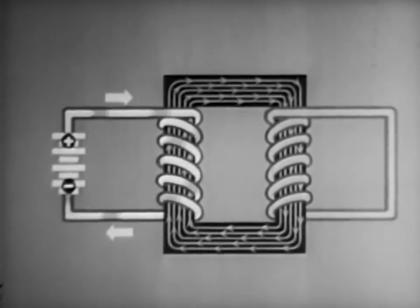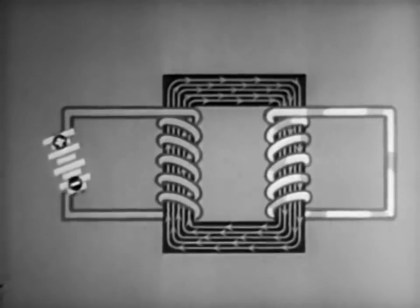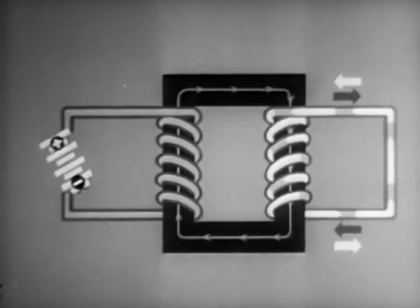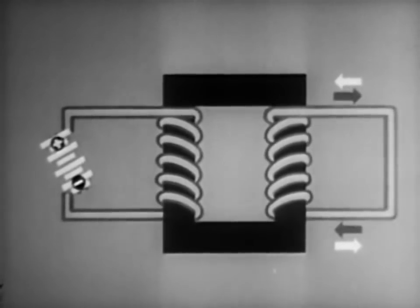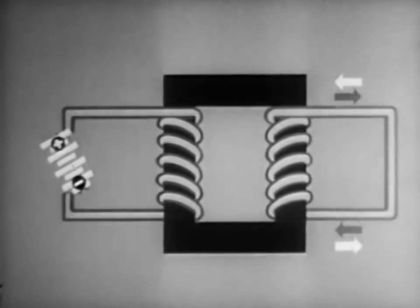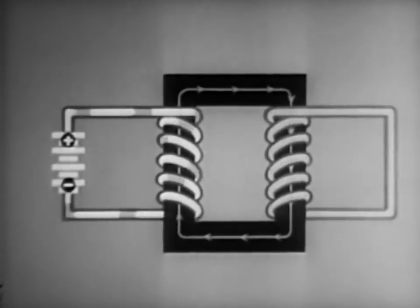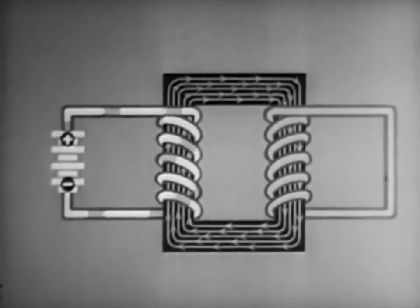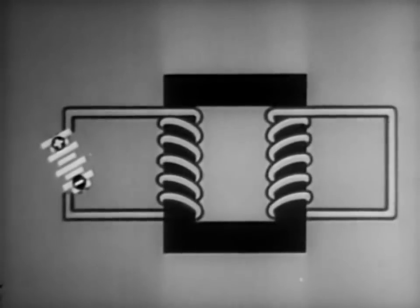Watch what happens when the current supply is cut off. As the magnetic flux dies, current again flows for an instant in the second winding, this time in the opposite direction. This, then, is the first important fact about a repeating coil. It blocks direct current except at the instance when the current is changing.